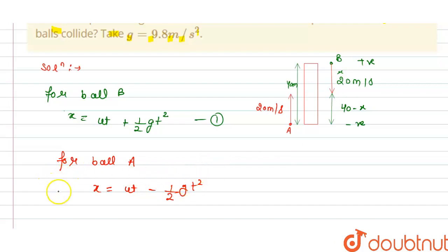The distance must be 40 - x for ball A. So this is the distance 40 - x here. We have 40 equals...